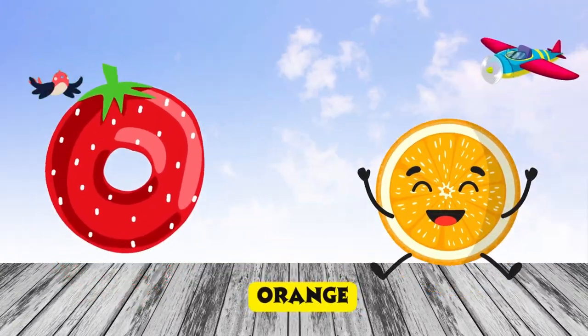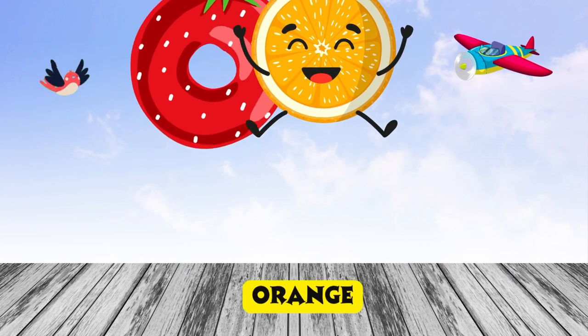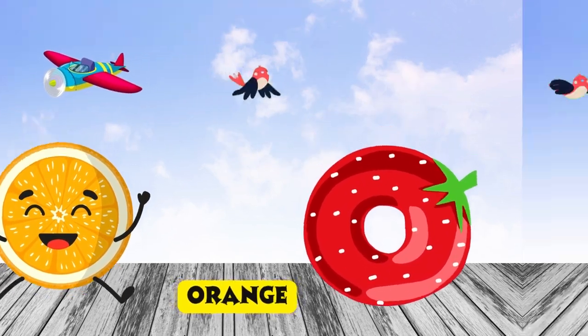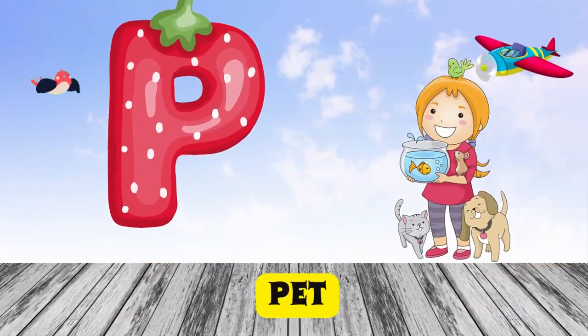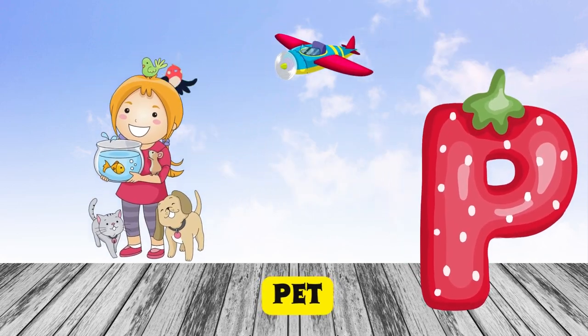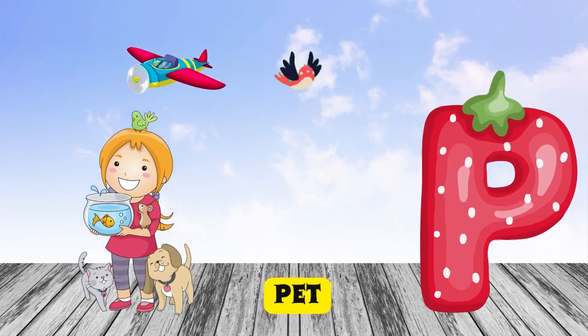O is for orange, o-o-orange. P is for pet, p-p-pet.